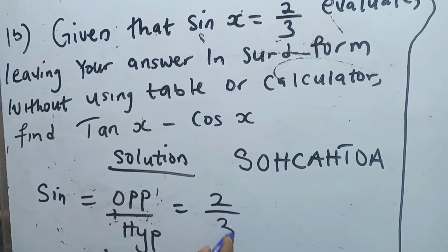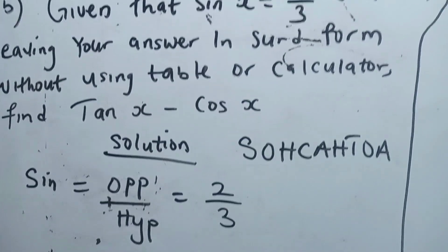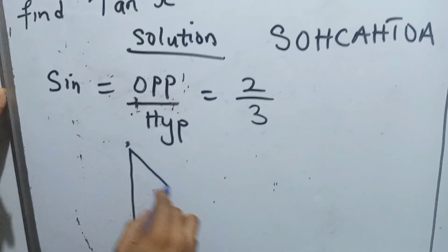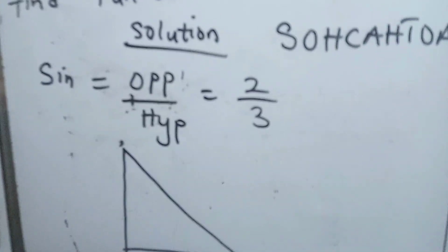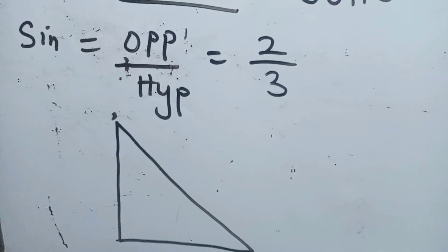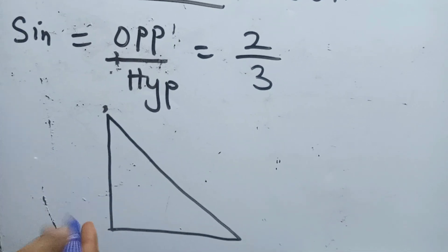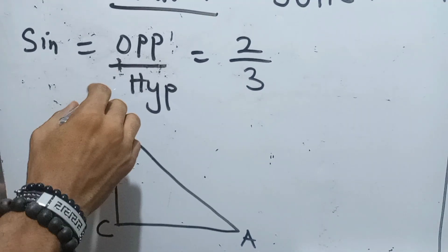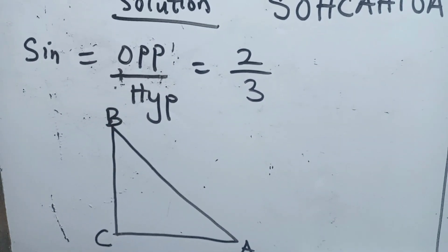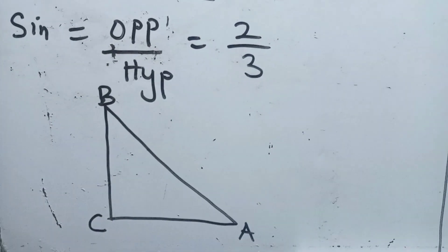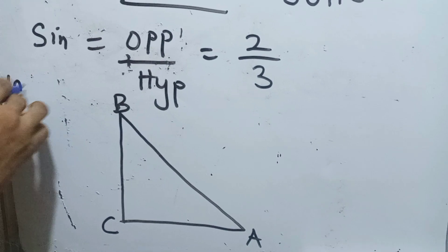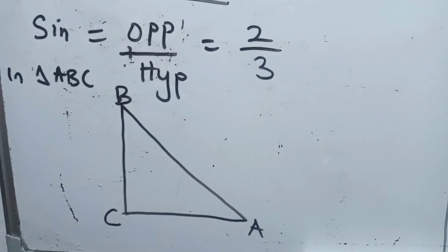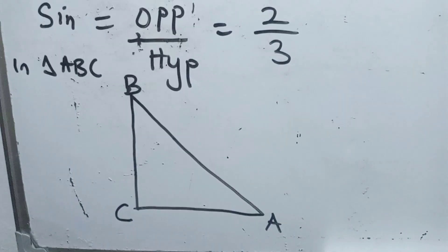I will draw a triangle and label it. Here's my triangle with vertices A, B, and C. Now I can identify where our hypotenuse is and where our opposite is.